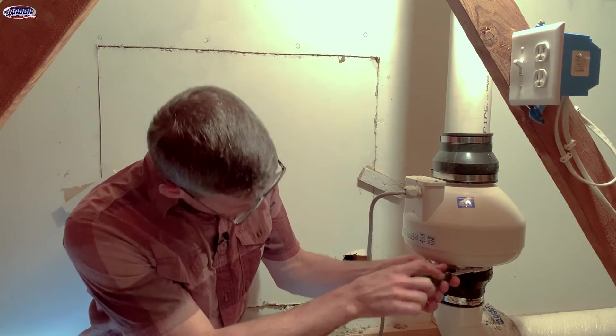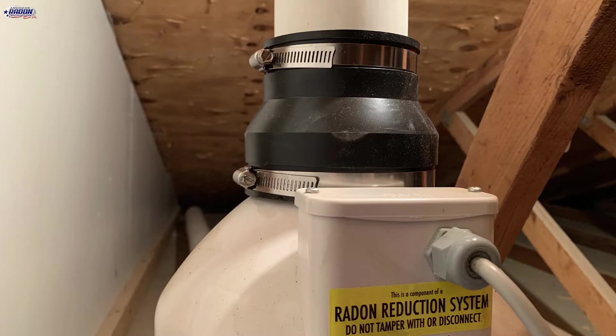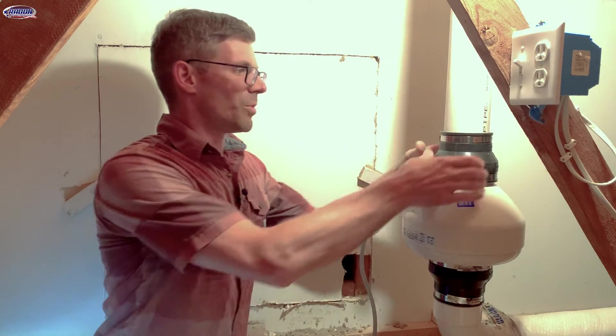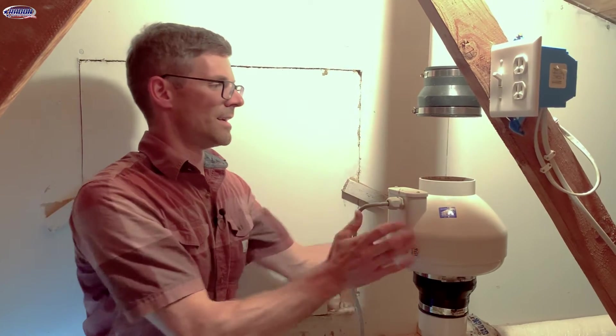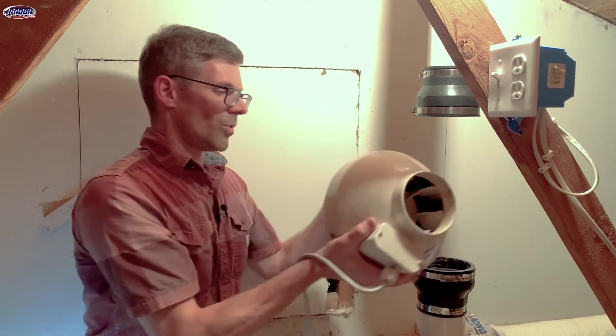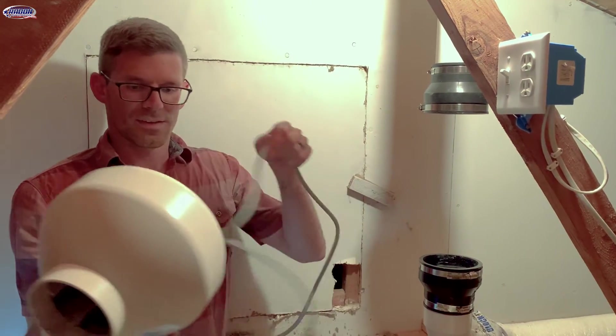Then we're going to loosen up the two worm drive screws that hold the radon fan in place. Then we can turn this to break that seal a little bit easier, and we'll take the fan out as easy as that.